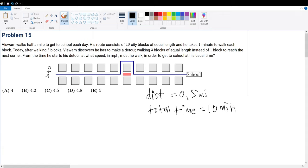Today, after traveling five blocks, this one discovers he has to make a detour, walking three blocks of equal length instead of one block to reach the next corner. From the time he starts this detour, at what speed must he walk in order to get to school at his usual time? This one is walking his usual pace, but all of a sudden he gets to here, he changes his pace to get to school at the same time he usually does.